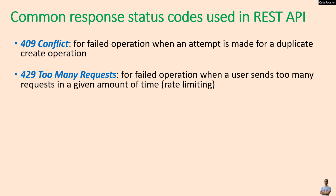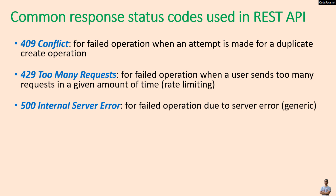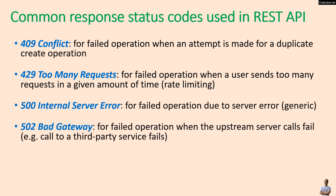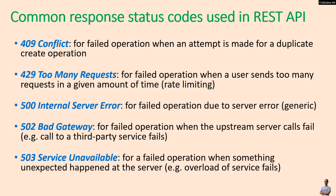Use status code 429 Too Many Requests for failed operations when a user sends too many requests in a given amount of time — this is rate limiting. Use 500 Internal Server Error for failed operations due to a server error; this is a generic error. Use 502 Bad Gateway when upstream server calls fail, for example a call to a third-party service fails. Use 503 Service Unavailable when something unexpected happens at the server, such as overload or service failure.